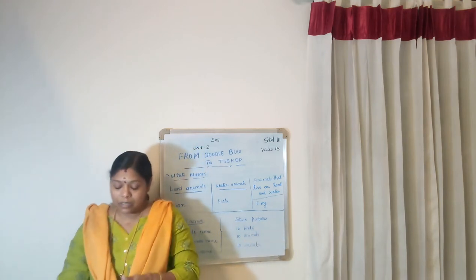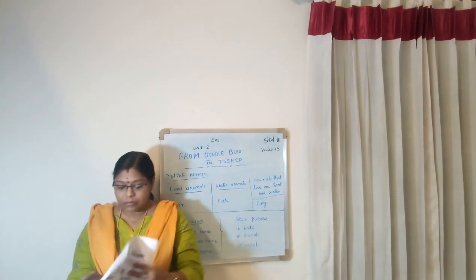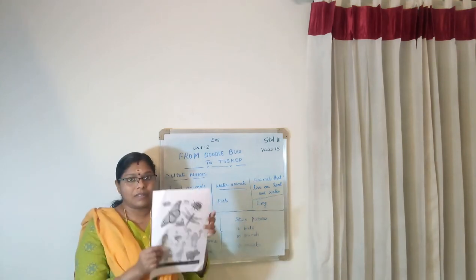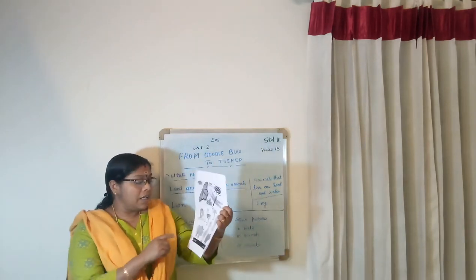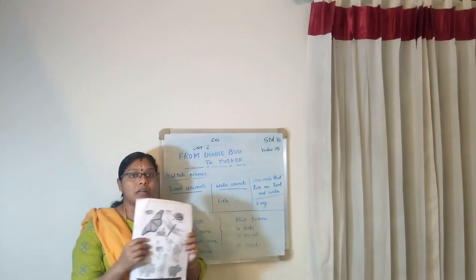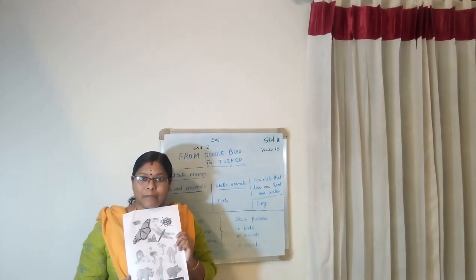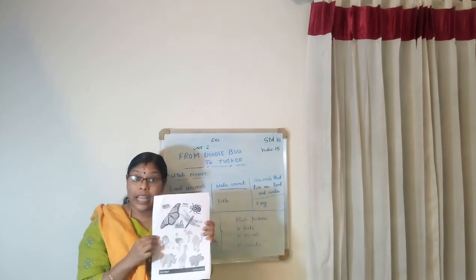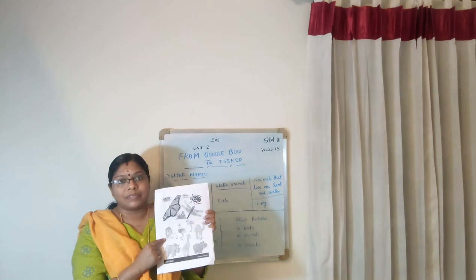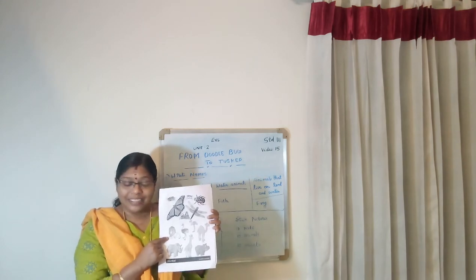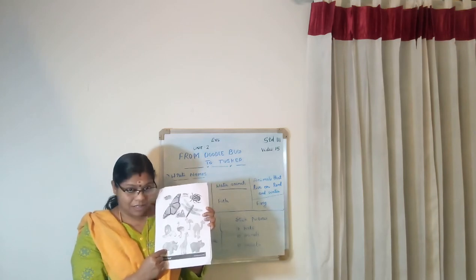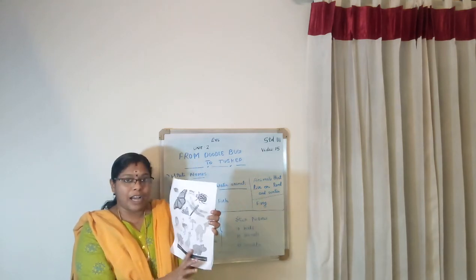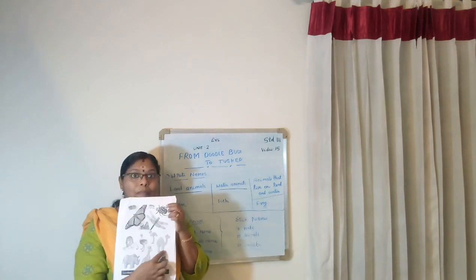Today we are going to discuss about some animals. Look here — can you see the picture? Different types of animals, birds, and insects are shown. Can you see? This one is a lion, the king of the jungle. This one is a rhinoceros. This one is a giraffe, the tallest animal. Hippopotamus. Camel, the ship of the desert.